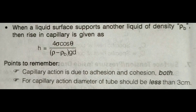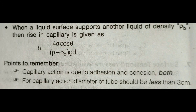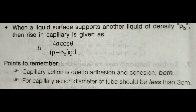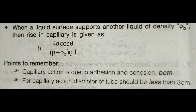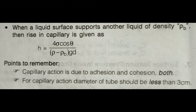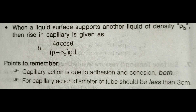When a liquid surface supports another liquid of density rho-b, the capillary rise is given as h equals 4 sigma cos theta divided by (rho minus rho-b) times g times d. Two important points: capillary action is due to both adhesion and cohesion. For capillary action, the diameter of the tube should be less than 3 centimeters.